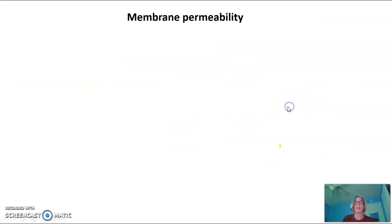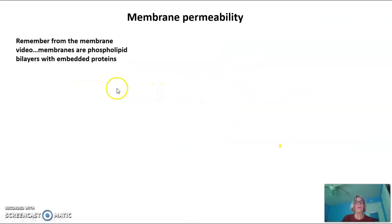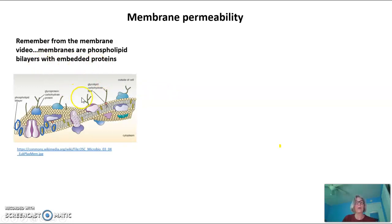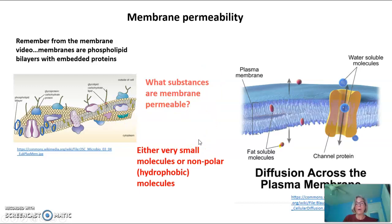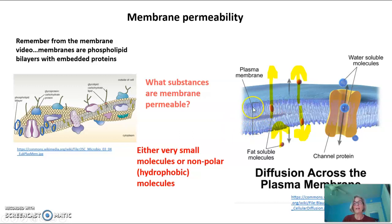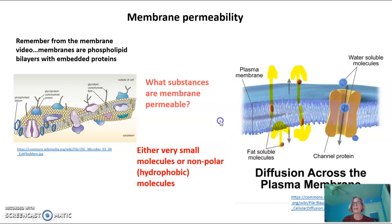Let's talk about membrane permeability. You should remember from the membrane video that membranes are phospholipid bilayers with embedded proteins, as pictured here. What substances are membrane permeable — in other words, what substances can just cross straight through a membrane? That's either very small molecules or nonpolar hydrophobic molecules. These red dots indicate fat-soluble or hydrophobic molecules that can pass right through the lipid bilayer, because the middle of the bilayer is composed of fatty acid tails and is a very hydrophobic environment. So these fat-soluble molecules can simply dissolve through the membrane and get from one side to the other.